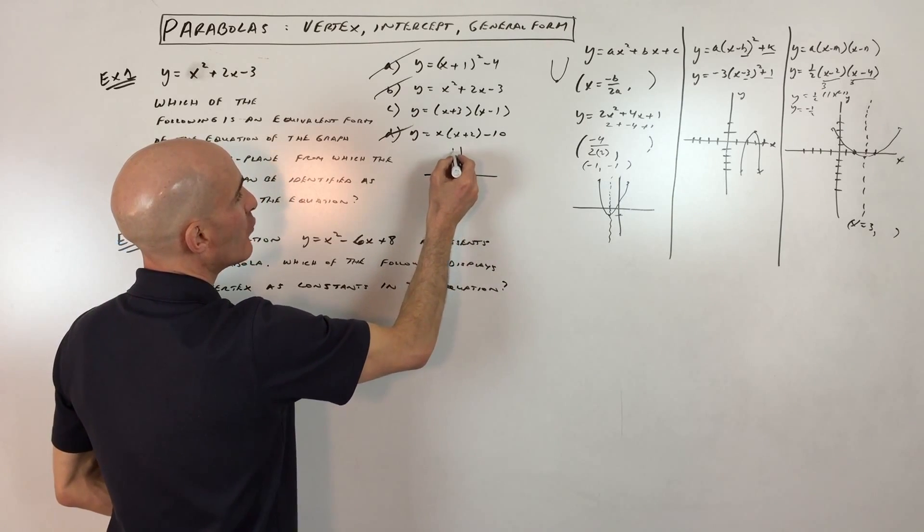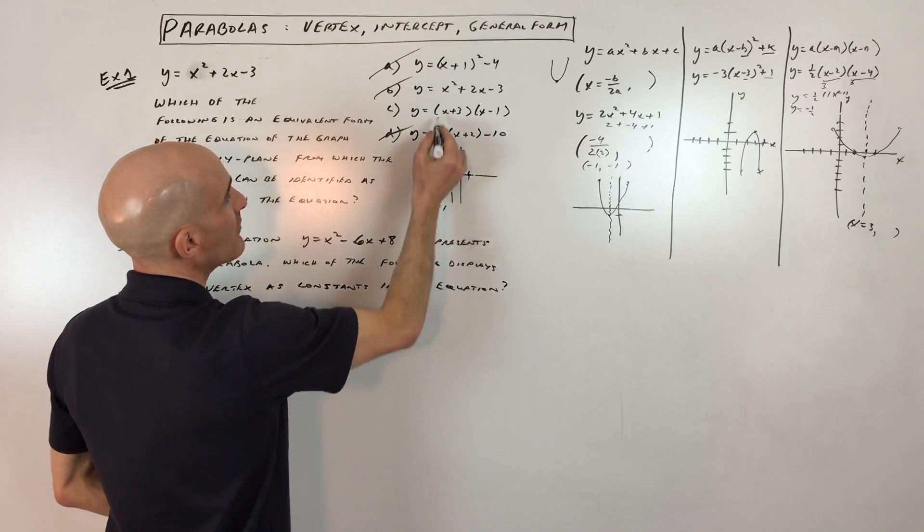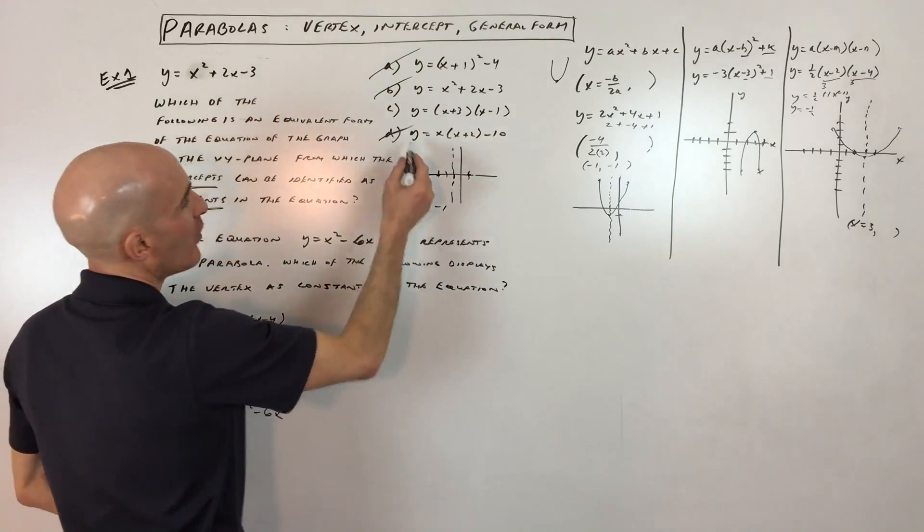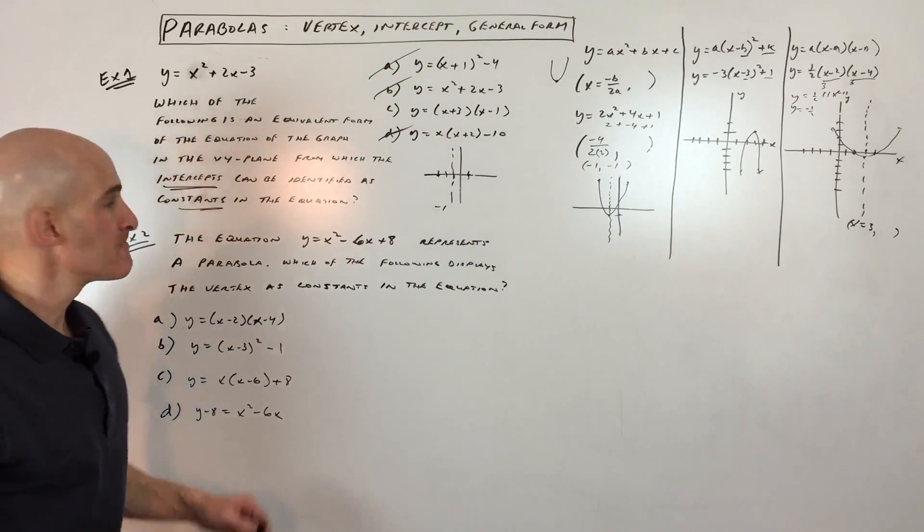You can find the halfway point. That's your axis of symmetry, which is negative 1. And by putting negative 1 back in, you can find the y-coordinate and draw your parabola.